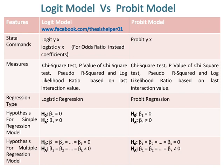The type of regression for the Logit Model is logistic regression, whereas the type of regression for the Probit Model is Probit Regression. Hypotheses for simple regression models and multiple regression models are given for both Logit Model and Probit Model, and these are the same.